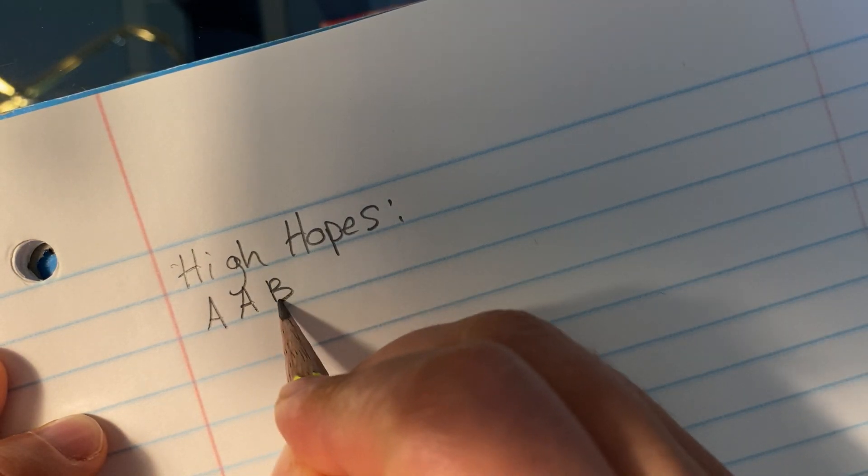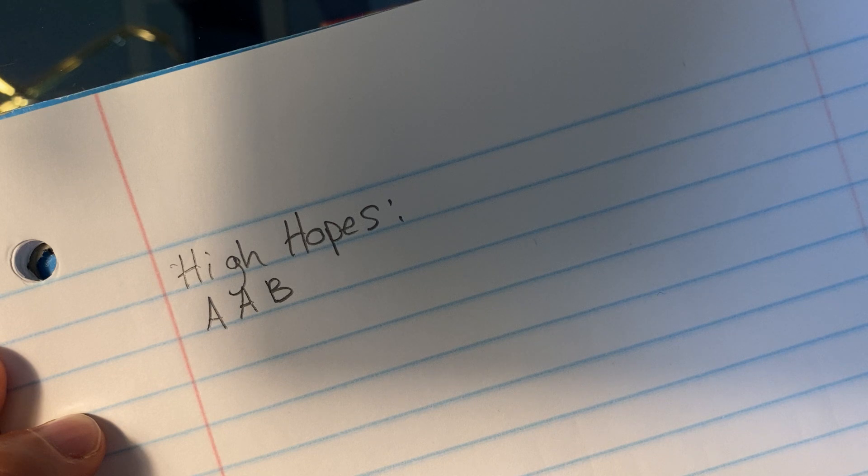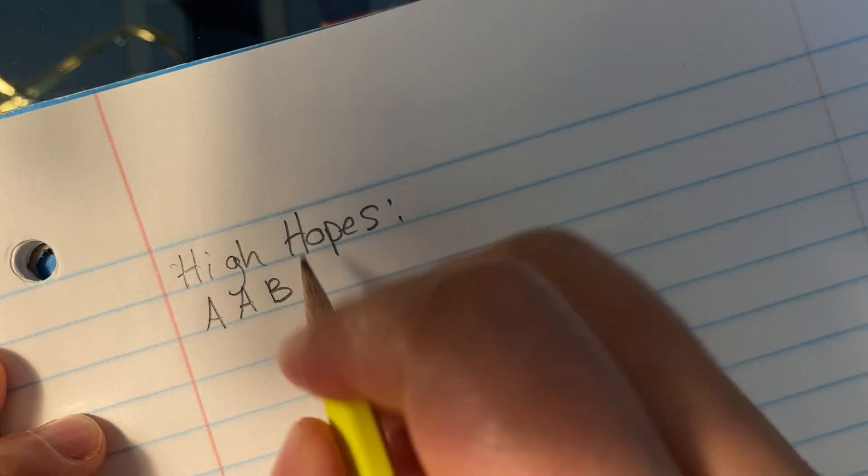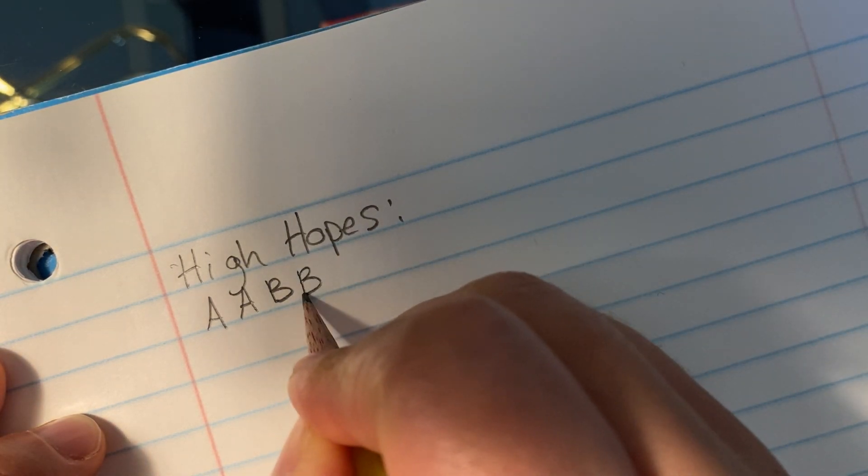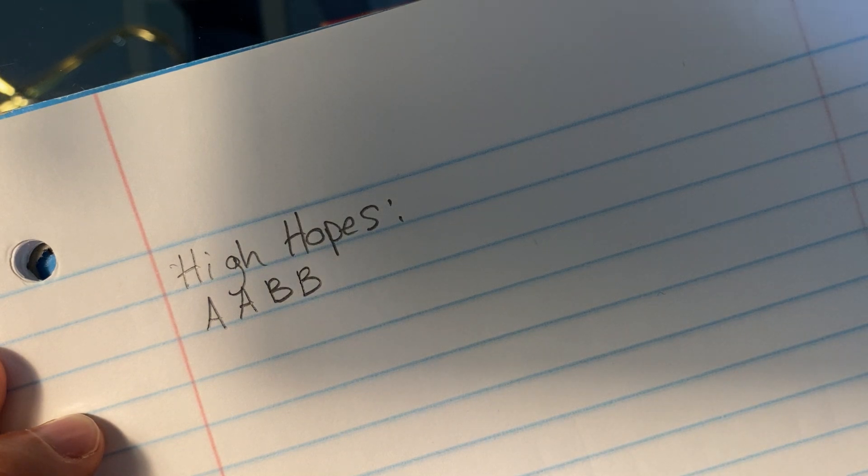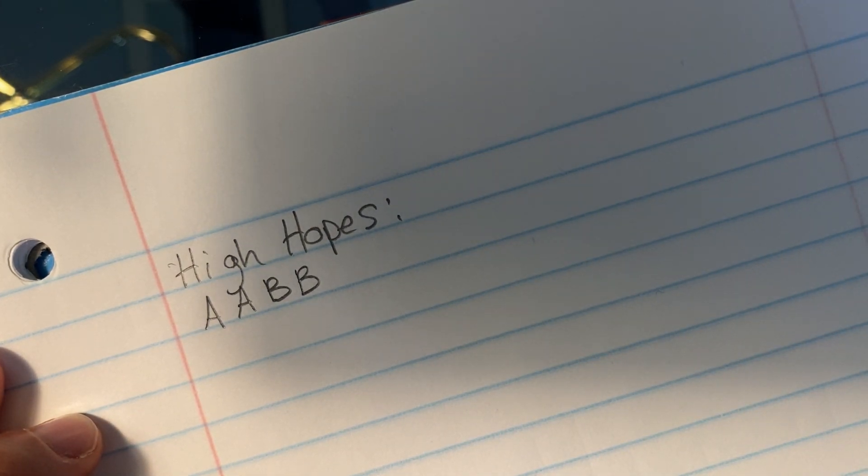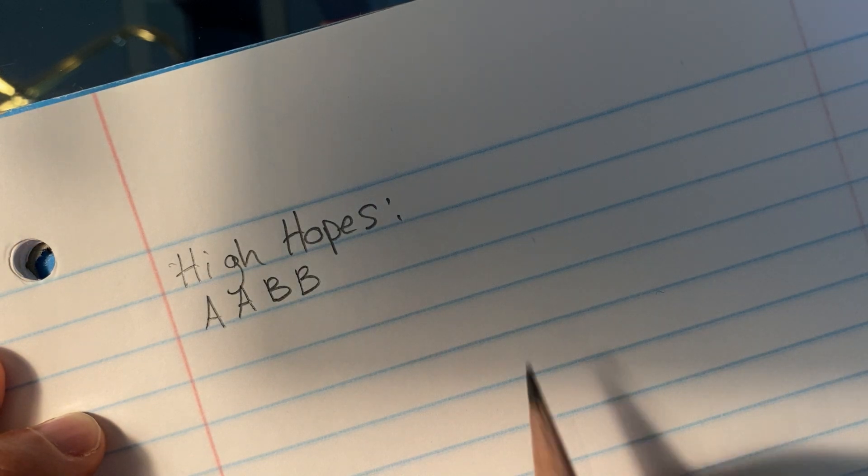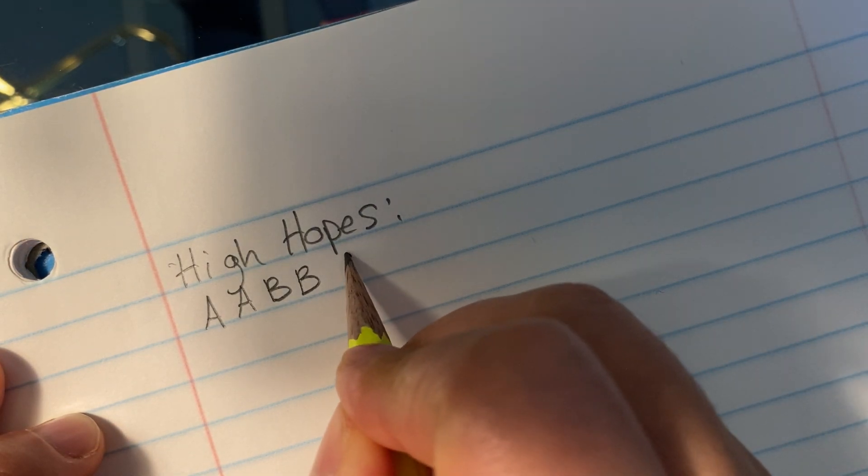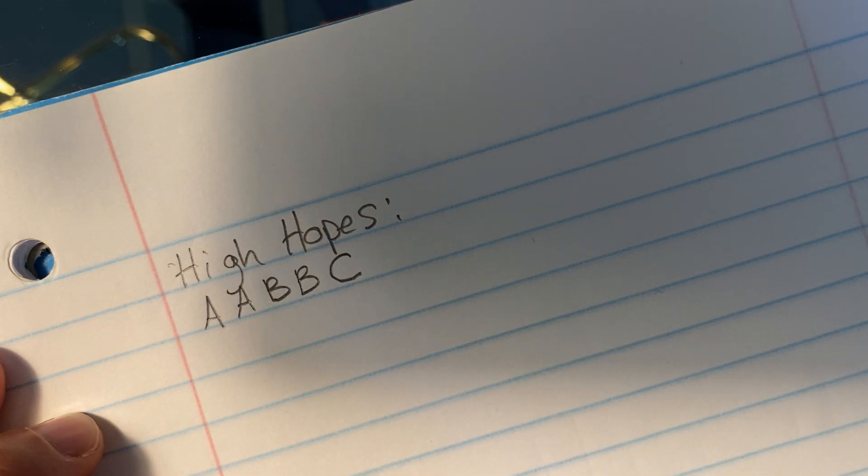Here's our verse. Verse two, as you can tell the verse is telling the story. Now this is a pre-chorus, it's building up to the chorus, so that's a C.